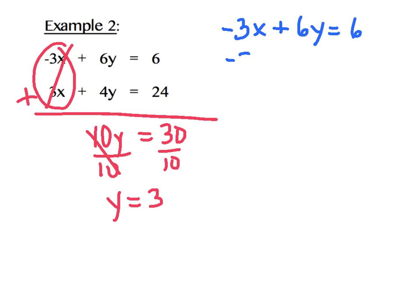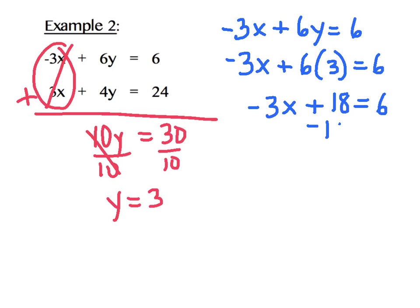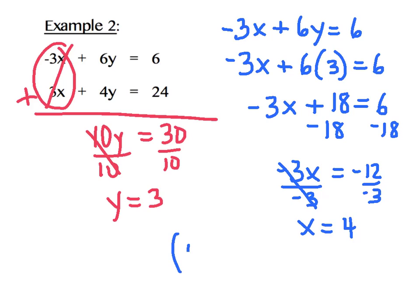So negative 3x plus 6 times 3 equals 6. Negative 3x plus 18 equals 6. And now I'll use an inverse operation to start getting x by itself. That's going to leave me with negative 3x equals negative 12. Divide both sides by negative 3 to isolate x will give me x equals 4. And my solution to my system is the ordered pair 4, 3.